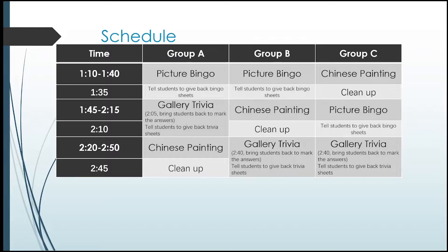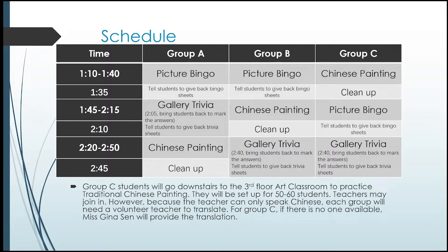For the Gallery Trivia, in the last 10 minutes of the activity, please tell all the students to return so you can give them the answers and the students can peer assess. Group C students will go downstairs to the third floor art classroom to practice the Chinese painting first. It will be set up for about 50 to 60 students, and each group will be broken up to about 50 students each.